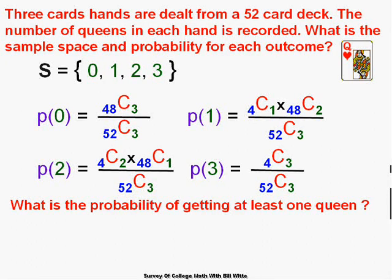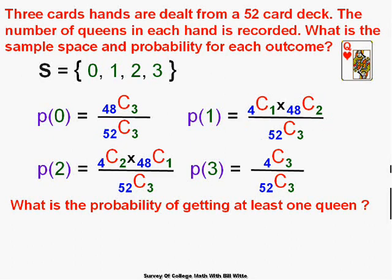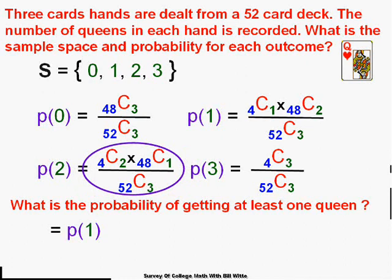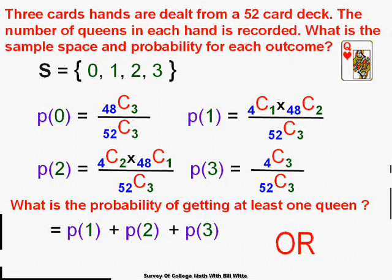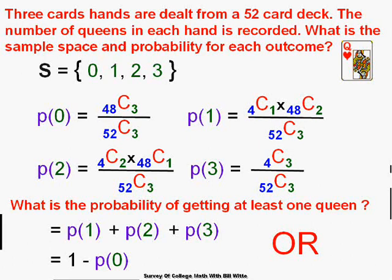What is the probability of getting at least one queen? You could add the probabilities of one, two, and three queens — but that's a lot of work. Remember the basic principles of probability: they all add up to 1. So just subtract the probability of getting none from 1. That's a much easier calculation. Don't be afraid to use 1 minus the complement to get your answer.